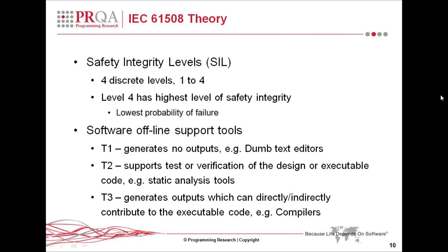The offline support tools are split into three categories, T1 through T3. T1 generates no output — for example, dumb text editors. Smarter text editors that impact output would not be considered T1. T2 supports test or verification of the design or executable code — this is where static analysis tools lie. T3 are tools that generate outputs which can directly or indirectly contribute to executable code, such as compilers and operating systems.